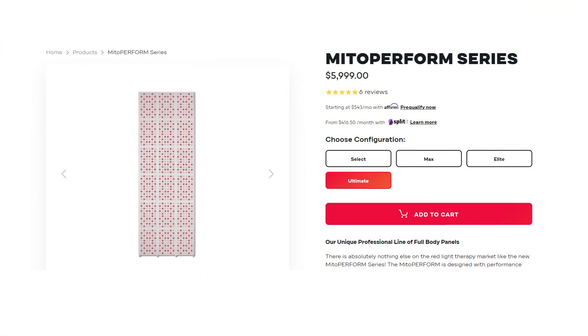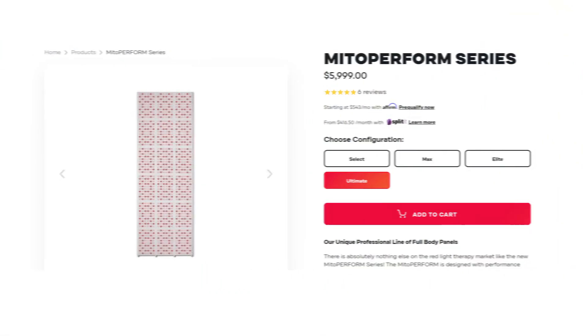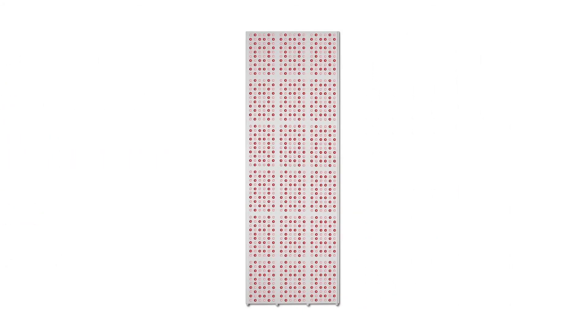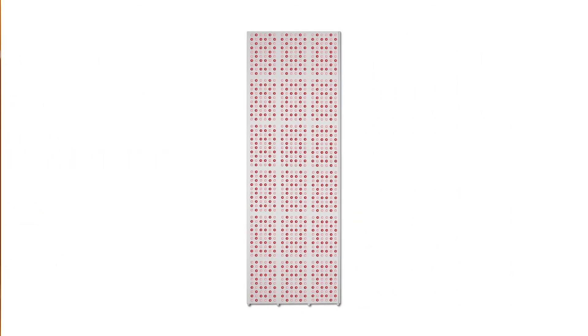You could compare it to the Mito Red Mito Ultimate, which is unique in the fact that it's one solid panel. It doesn't have the joins and you don't have the blank space. Again, though, it's a little bit more, $5,700, and it's a little bit smaller from an LED point of view.